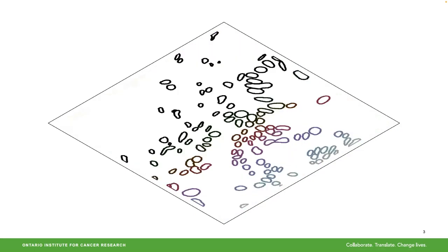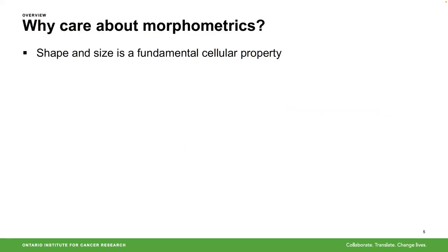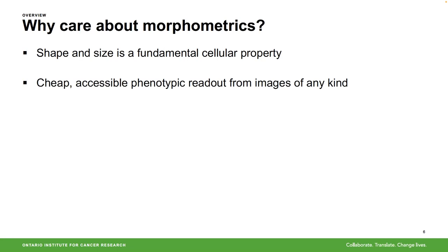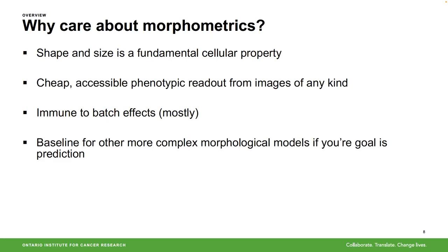But I'm not going to talk about any of that — I'm just going to talk about shape and size. You might ask: I just described all this rich information in this tissue, why do I care about just shape and size? There are a few reasons. Shape and size is a fundamental cellular property — it's a question in itself. It varies with disease, varies along differentiation axes, and with full genome duplication you get changes in nuclei. It's often the most cheap and accessible phenotypic readout from images — if you have a segmentation model you can get shape and size easily. It's also immune to batch effects if your segmentation model is trained with a lot of data augmentation, making it robust across samples. And it's a simple baseline for building more complex models.